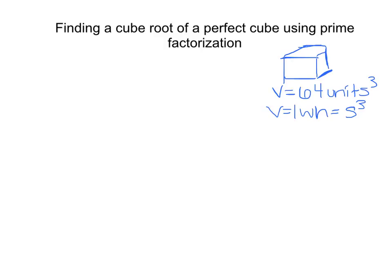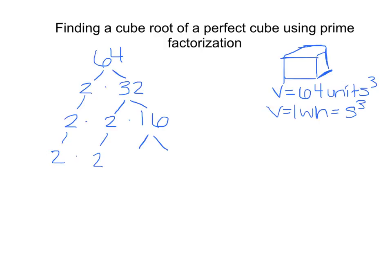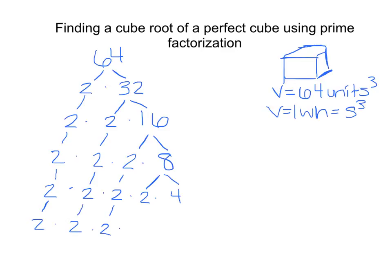We can use prime factorization to figure this out. Using a factor tree for 64: 2 times 32 gives 64. Then 32 breaks down to 2 times 16. Then 16 breaks down to 2 times 8. Now 8 is still not a prime number, so we keep going — 8 breaks down to 2 times 4. And 4 is still not a prime number, so we need at least one more step.